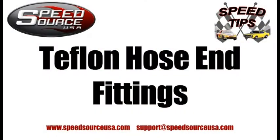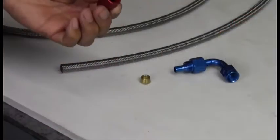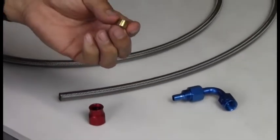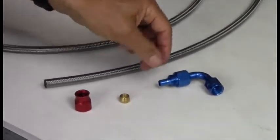These are the components that make up the fittings. You have a socket, an olive or ferrule, and the fitting itself.